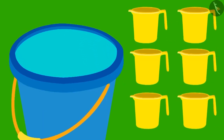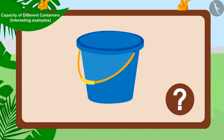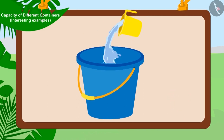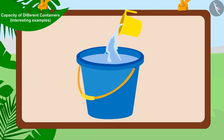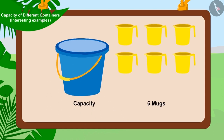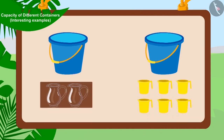Golu's bucket was completely filled with six mugs of water. Children, can we say that the capacity of Golu's bucket is six mugs? Yes, because Golu's bucket was completely filled with six mugs of water, so we can say the capacity of Golu's bucket is six mugs. Remember, children — we can describe the capacity of any container using different utensils.